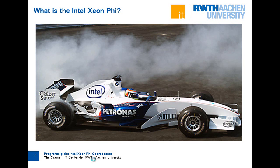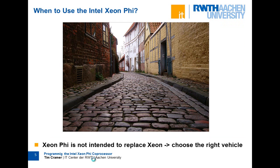The Xeon Phi is like a Formula 1 car or sports car - it can be very fast, but you have to be careful because you would not drive the car everywhere. If you have a rough street like this, it's not a good idea to use a Formula 1 car. Basically this means the Xeon Phi is not intended to replace the CPU - you have to choose the right vehicle.